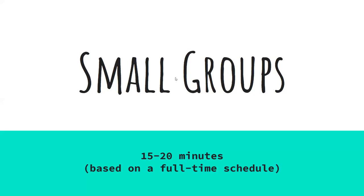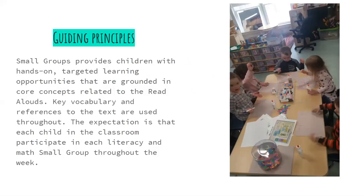Small group time is based on a full-time 15 to 20 minute schedule. The guiding principles are that small groups provide children with hands-on, targeted learning opportunities grounded in core concepts, often related to the read-aloud. Key vocabulary and references to the text are used throughout, and the expectation is that each child participates in both literacy and math small group activities throughout the week.